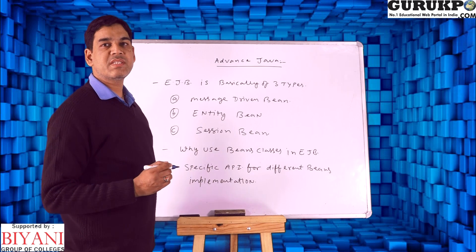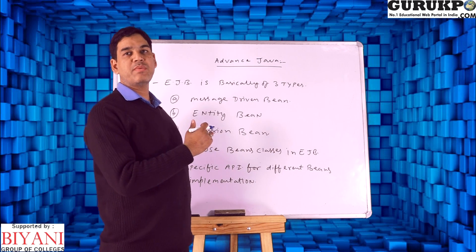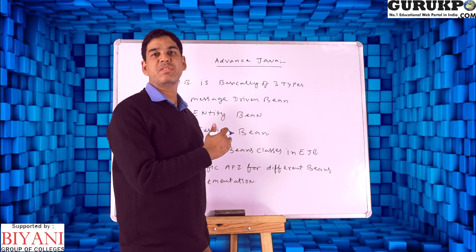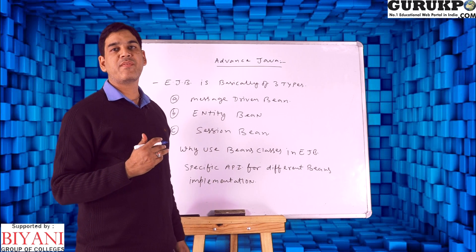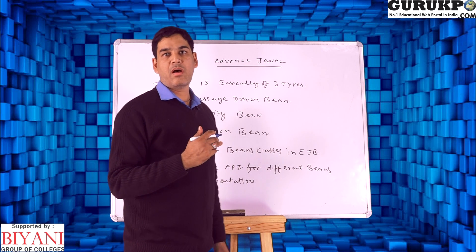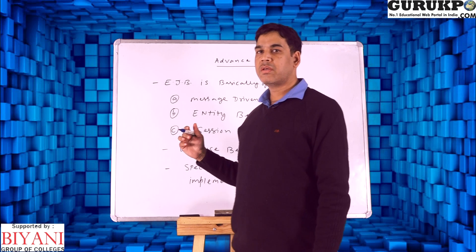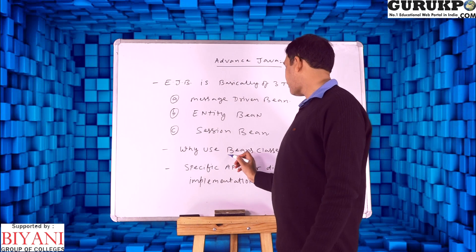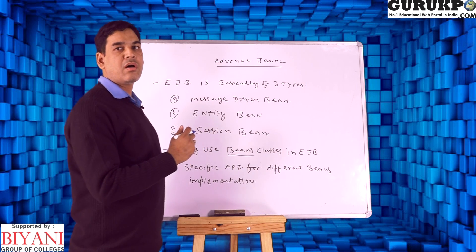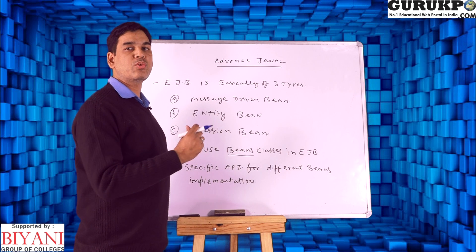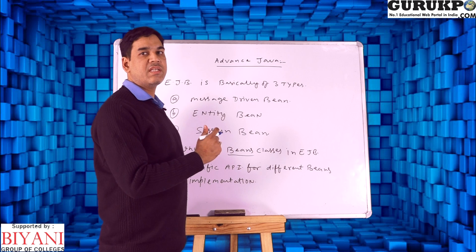We discussed what Enterprise Java Beans is and why we use it. Basically in enterprise applications in Java, we have multi-tier architecture, meaning we have different multiple layers that we can access and implement in enterprise applications. For different applications like bean classes, we have specific types of APIs built particularly for the EJB part or the bean part.